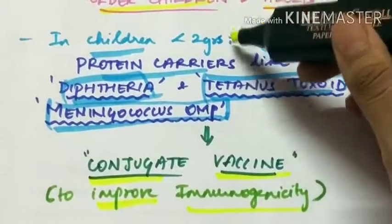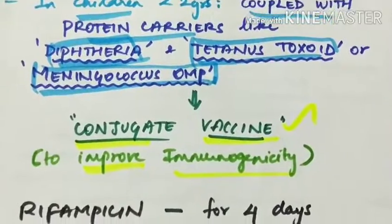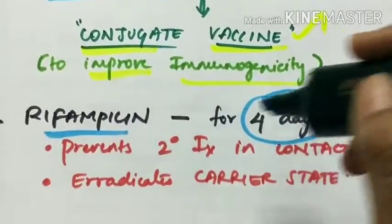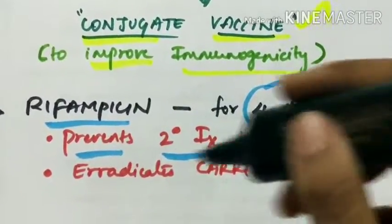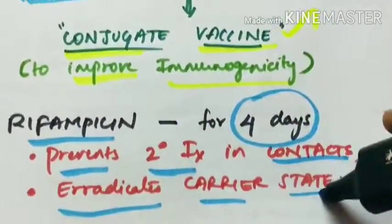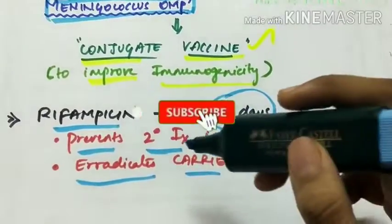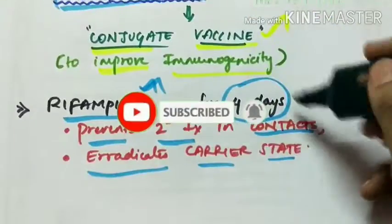So for children less than 2 years of age, conjugate vaccine is given. Rifampicin is given for 4 days to prevent secondary infection in contacts and also to eradicate the carrier state. So for treatment of secondary infection in contacts or eradication of carrier state, Rifampicin is given for 4 days.